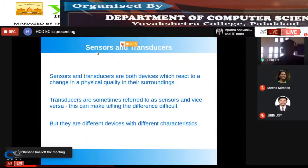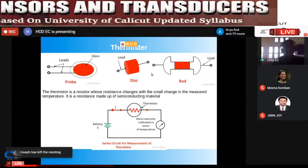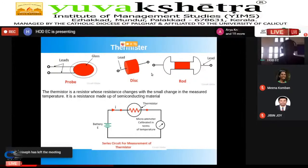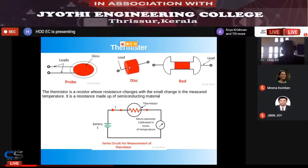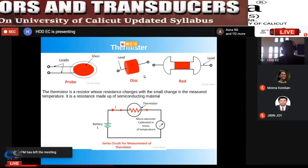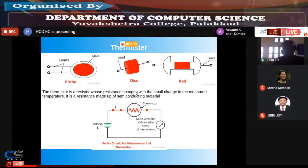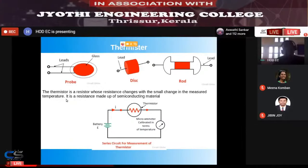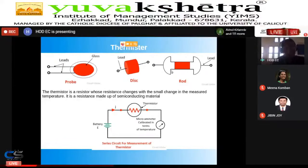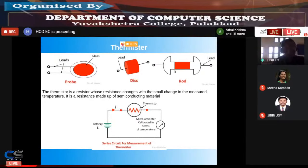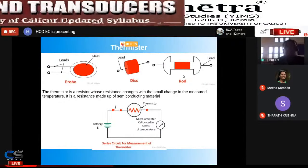My first aim is to differentiate between sensors and transducers. First, I want to show you a thermistor — there are three types shown: probe type, disc type, and coil type. A thermistor is a resistor whose resistance changes with a small change in temperature. It is made up of semiconducting material and its main function is to convert temperature into a change in resistance.